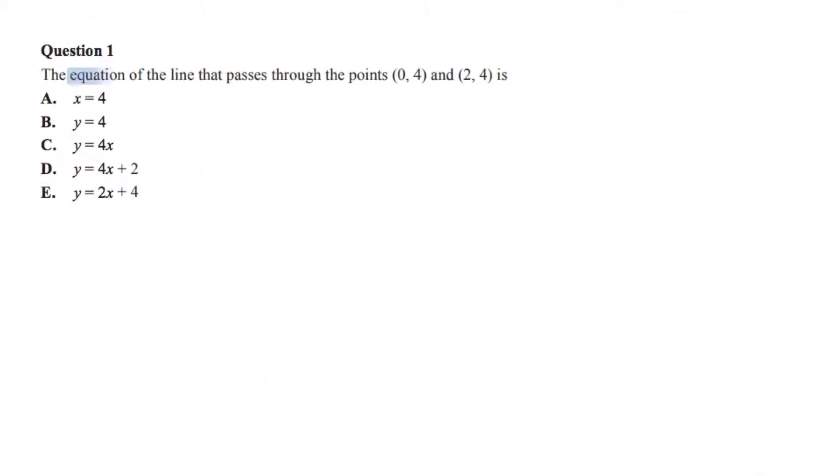Question 1. Determine the equation of the line that passes through the points with coordinates 0,4 and 2,4. There are two ways of solving this question, a graphical method and an algebraic method.